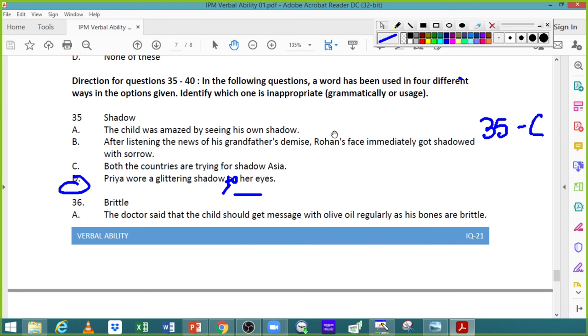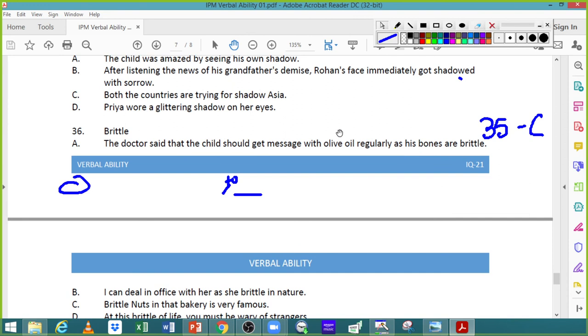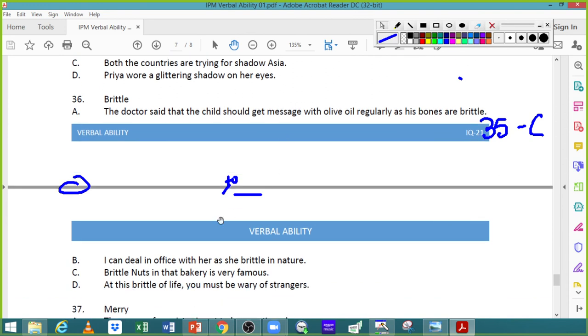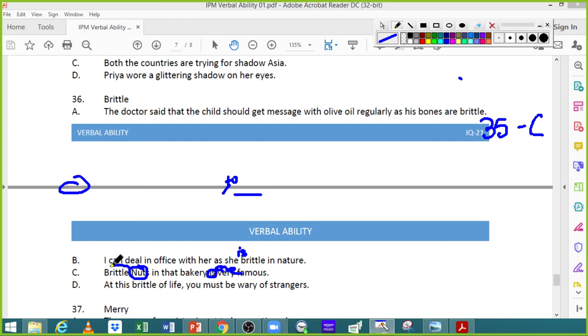Brittle. Brittle means something which can be easily broken. The doctor said that the child should get massage with olive oil regularly as his bones are brittle. Brittle is used correctly. Although message should be massage. I can't deal in office with her as she is brittle in nature. As she is brittle in nature should be there. Is is missing here. Brittle nuts in that bakery is very famous. Are should be there. At this brittle of life, you must be wary of strangers. Brittle of life doesn't make any sense. What does brittle of life mean? So B and C have a small error, but 36, D is definitely a bigger mistake. Because brittle of life is absolutely meaningless.